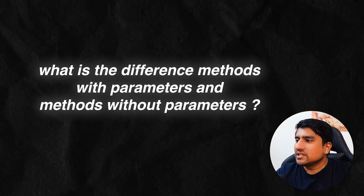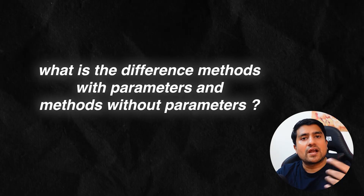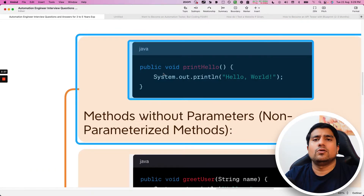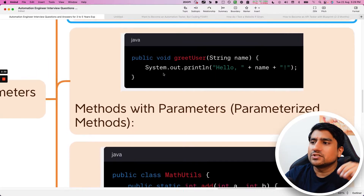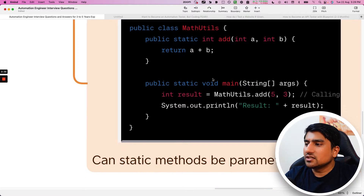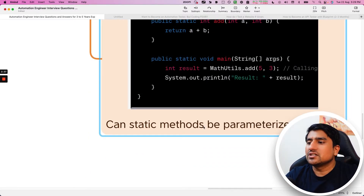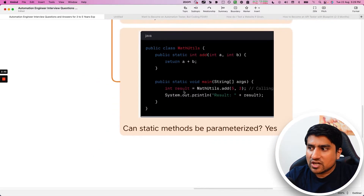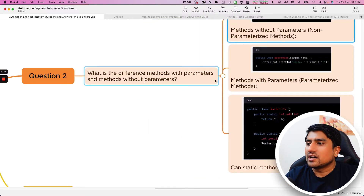Question number two: what is the difference between a method with parameters and a method without parameters? A method without parameters, for example 'printHello', has no parameters involved. A method with a parameter takes something like a string 'name'. Additionally, can a static method be parameterized? Yes — for example with MethodUtils, we can create a static method that is also parameterized. Two questions answered in one.